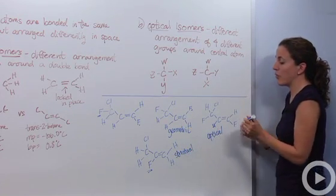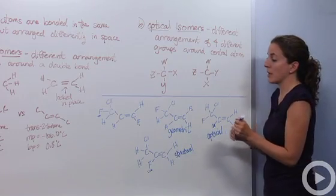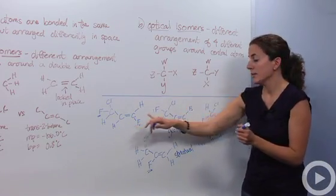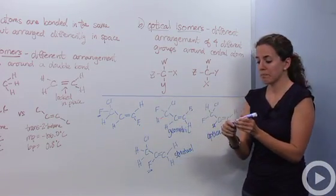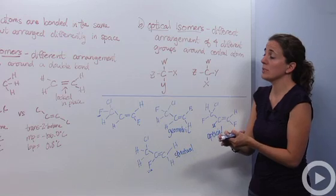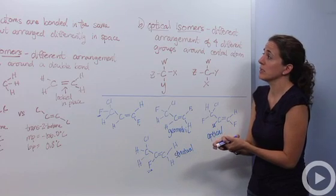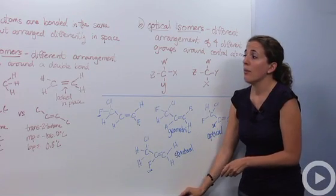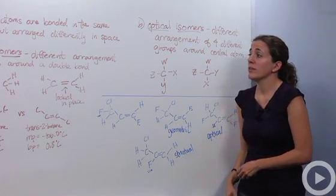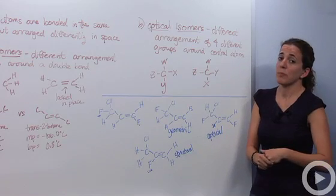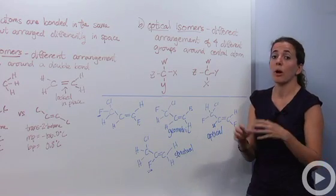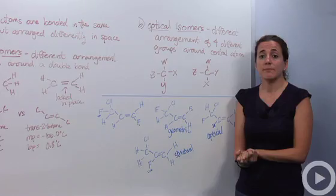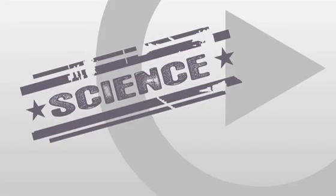So this is an example of the three different isomers compared to a particular compound. The three main isomers are optical, geometric, and structural. They all share the same molecular formula but are formed differently in space. That's what an isomer is.